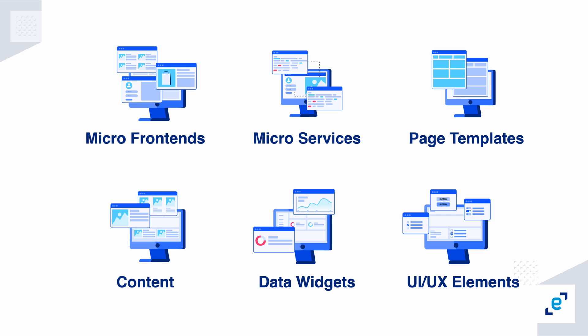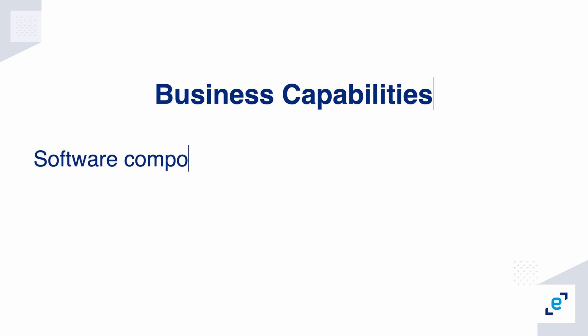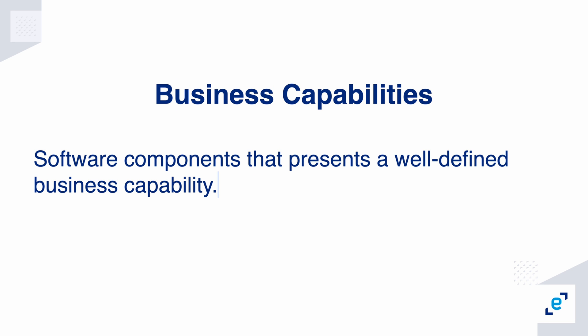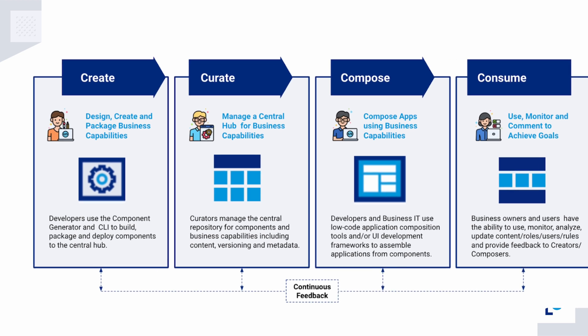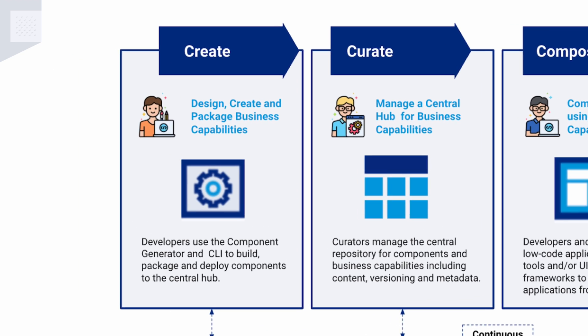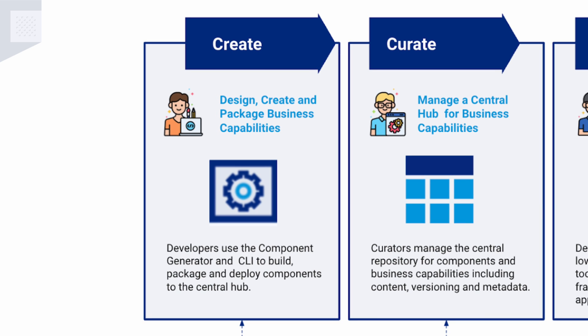Business capabilities are software components representing a well-defined business capability. To create the ACP's architecture, we recommend distributing responsibilities across four separate roles or functions.